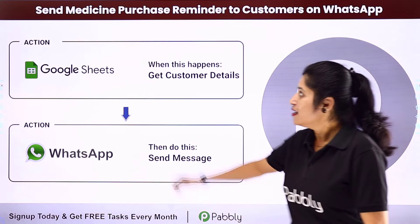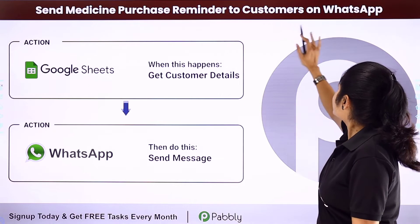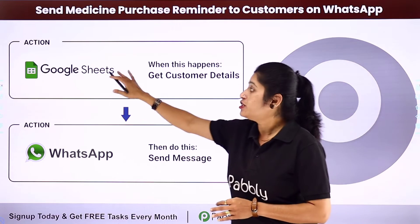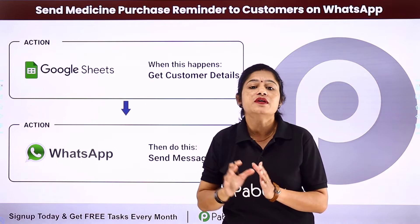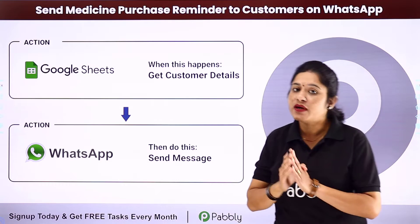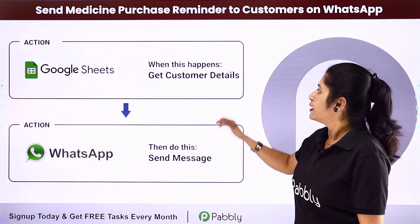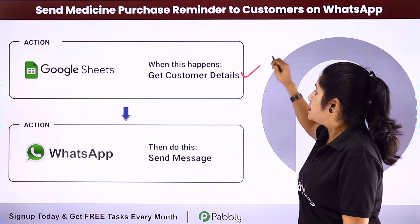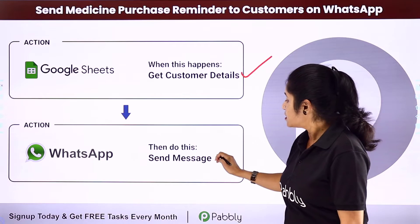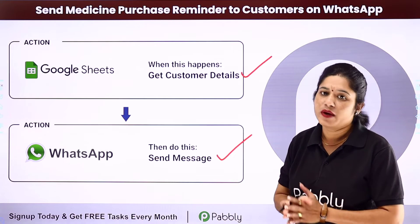In this video we are going to learn how you can send medicine purchase reminders to customers on WhatsApp. You have some customer details in your Google Sheet who have already purchased medicines from your medical store. Now you want to send a purchase reminder to them, so first we will collect the details of customers whose medicines are going to get over, and then send them a reminder message on their WhatsApp number.